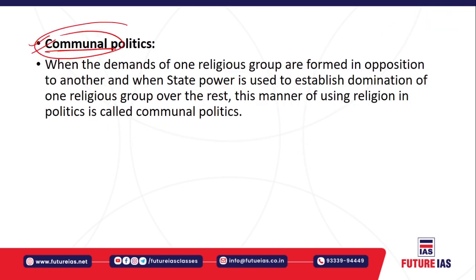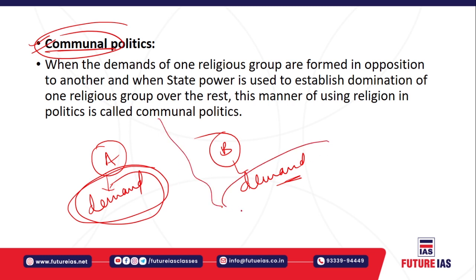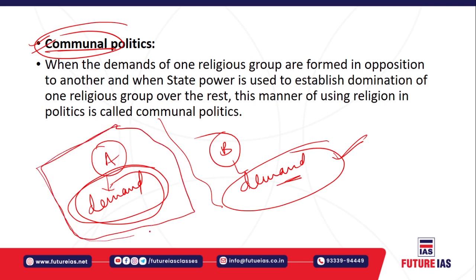Next is communal politics. Communal politics means politics which is based on a particular religion. If there are two religions in a society — say Religion A and Religion B — the demand of one religion may come in opposition to another religion's demand. Or if Religion A is the ruling community in a state and state power is used to establish the domination of that religious group, such use of religion in politics is called communal politics.